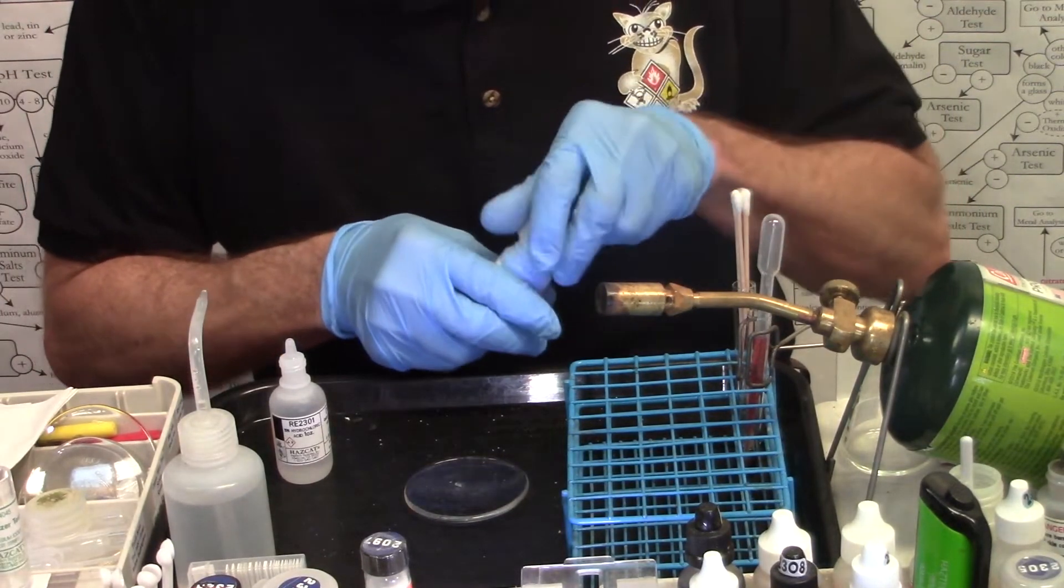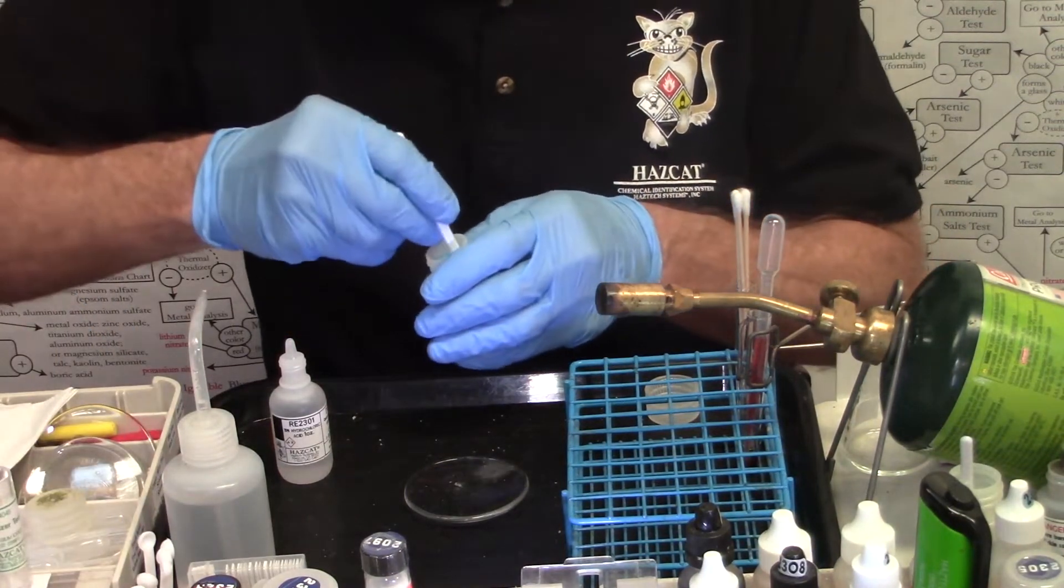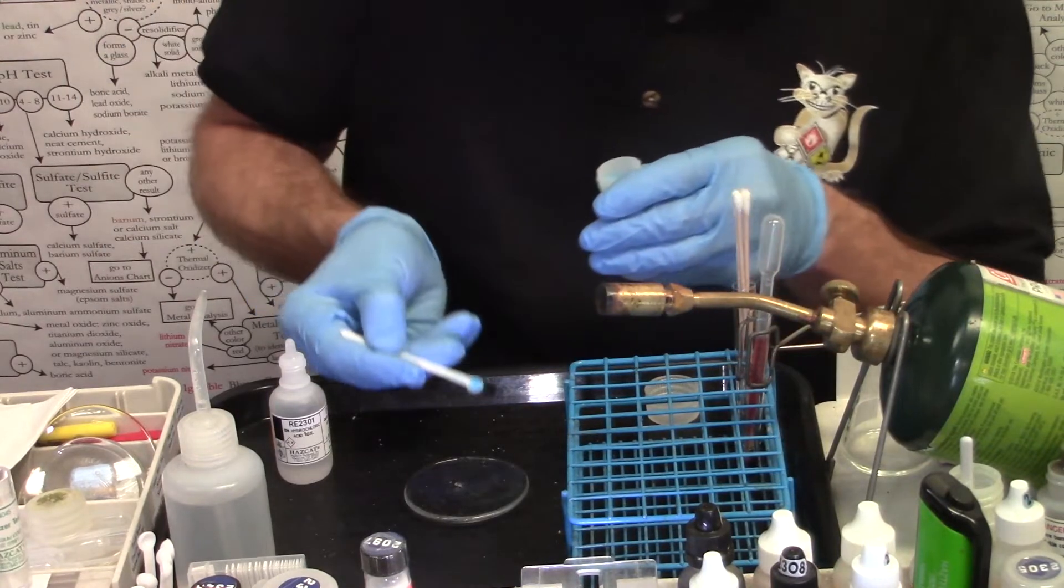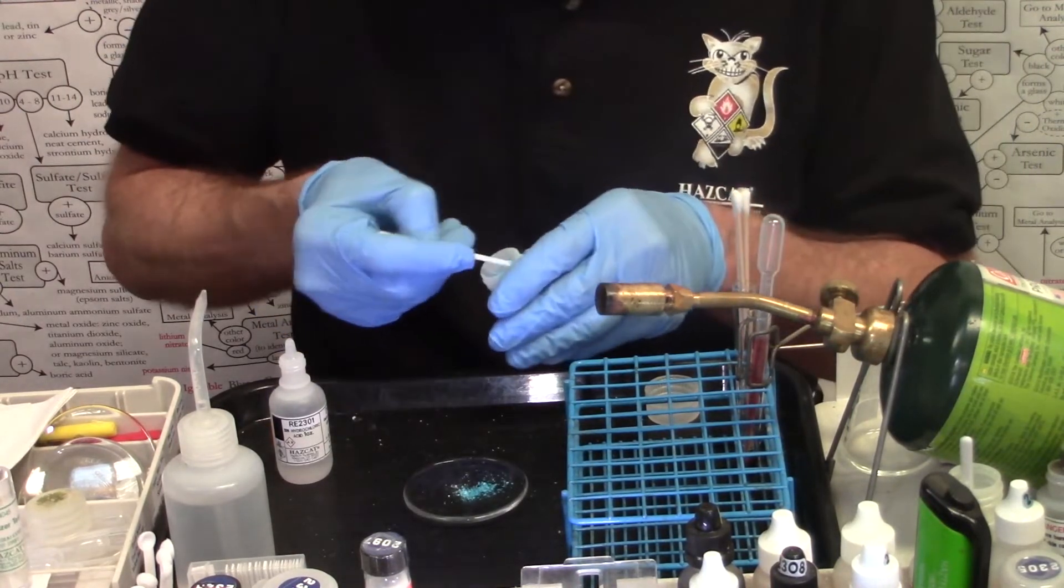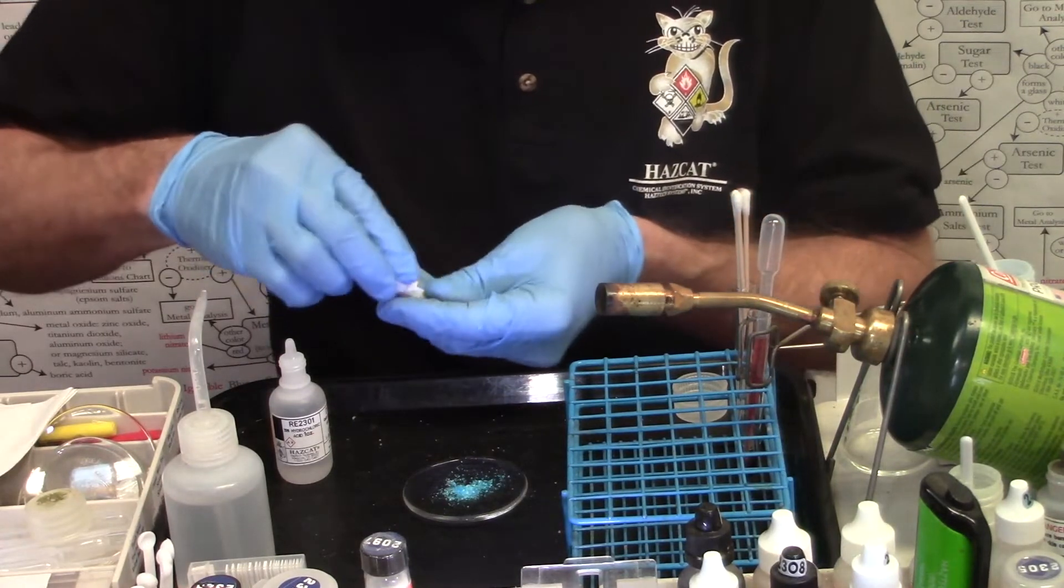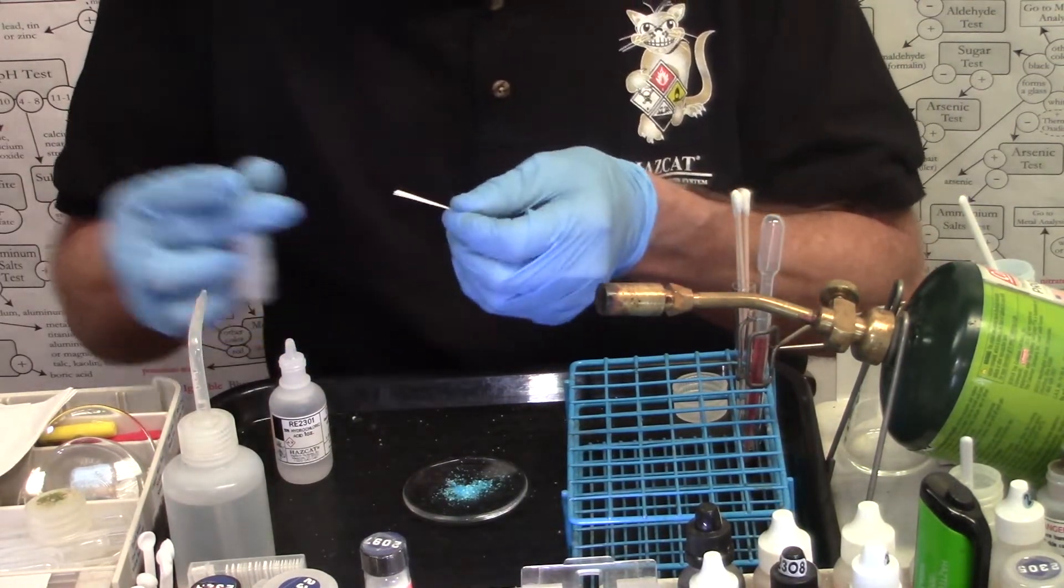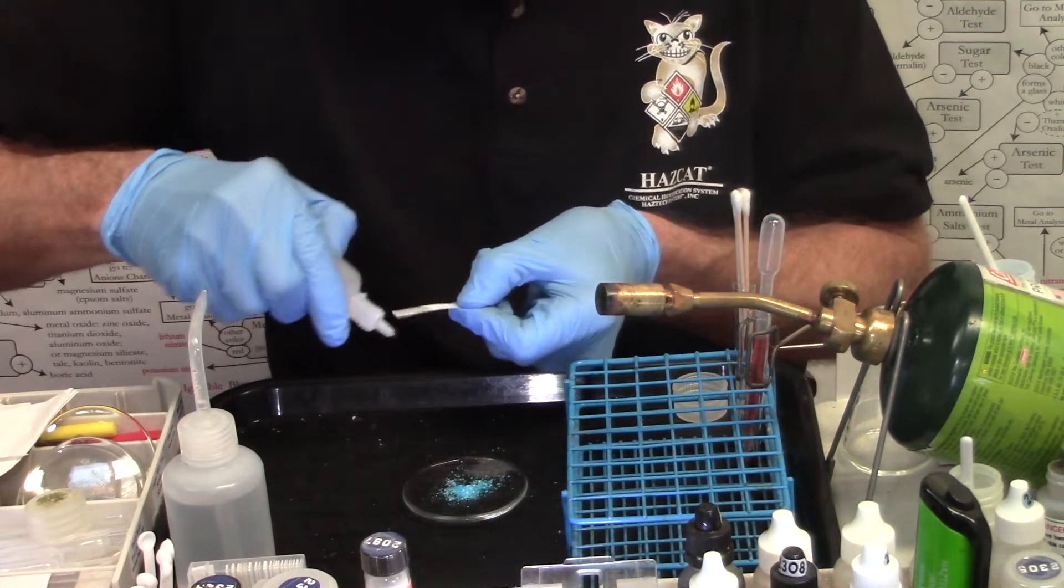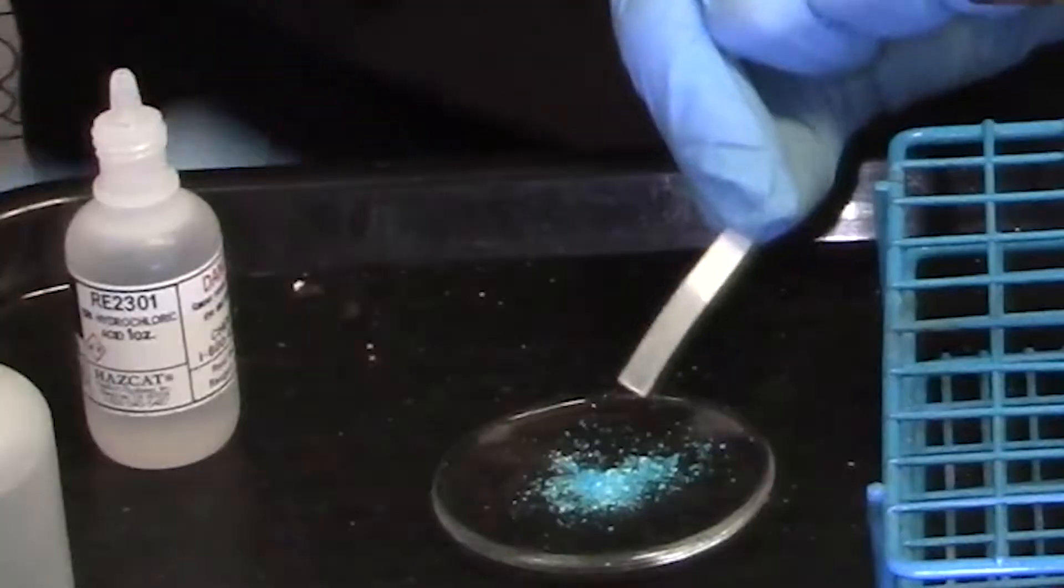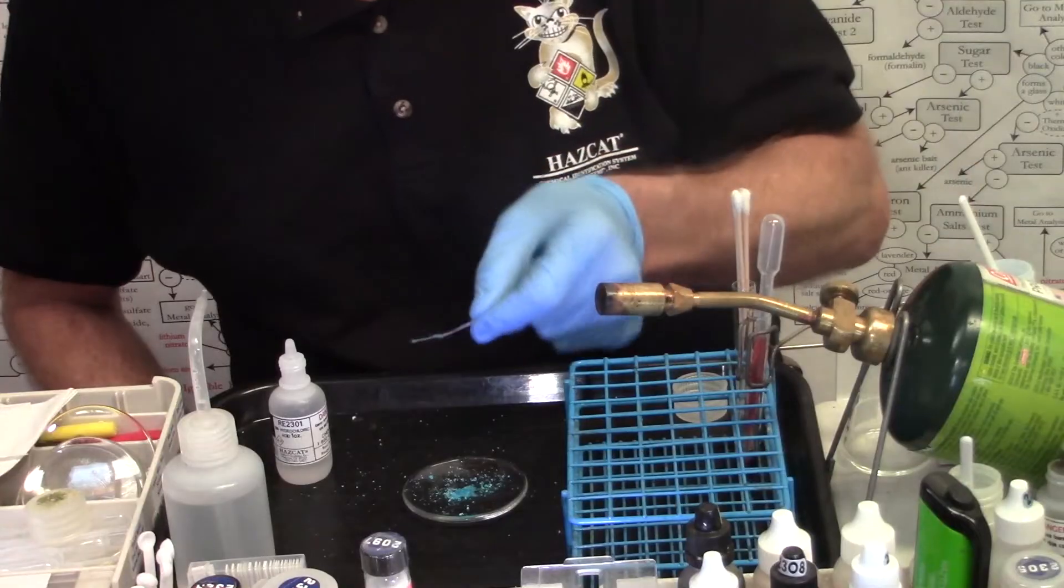Here I have a blue solid. Take two spoonfuls of my blue solid. One, two. Two drops of hydrochloric acid on my oxidizer test strip. One, two. And then it's one one thousand, two one thousand, three one thousand. Lift, look.